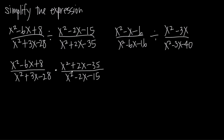Now instead of a division problem, it's a multiplication problem. Normally we would just multiply the numerators together to get the new numerator and multiply the denominators together to get the new denominator. But these are fairly complicated expressions, so what we want to do before we proceed with multiplication is see if we can simplify — if we can cancel anything from our fractions first. Because these are trinomials, there's a good chance we might be able to factor them.